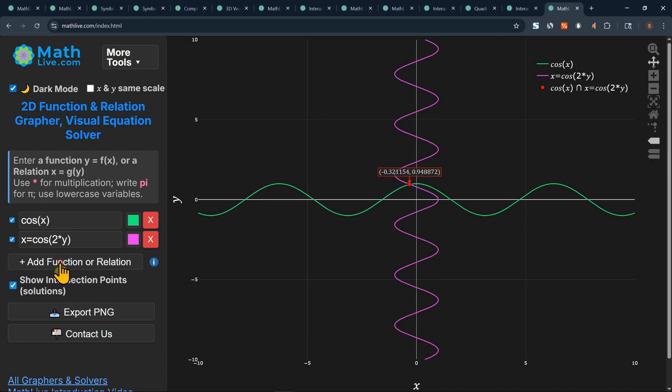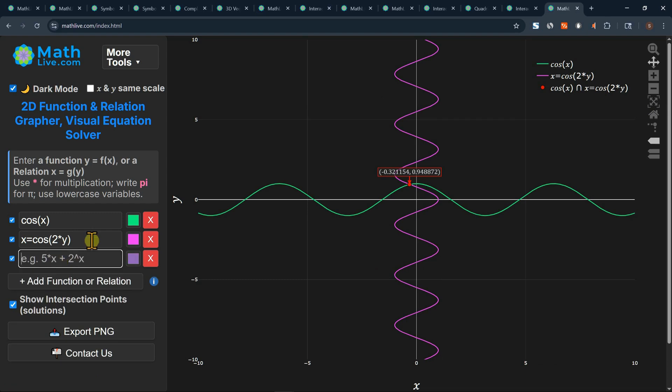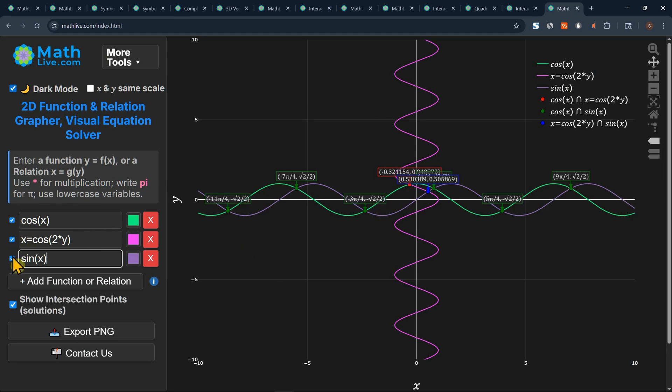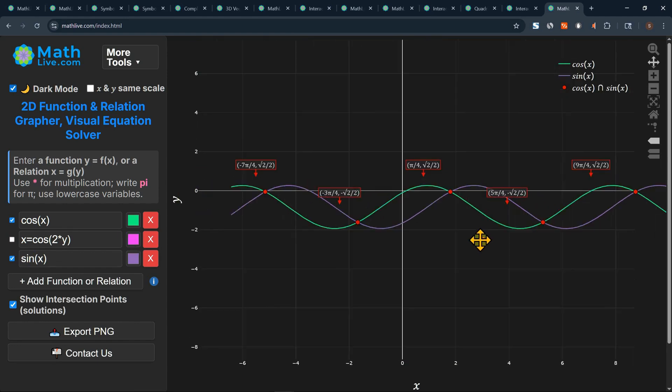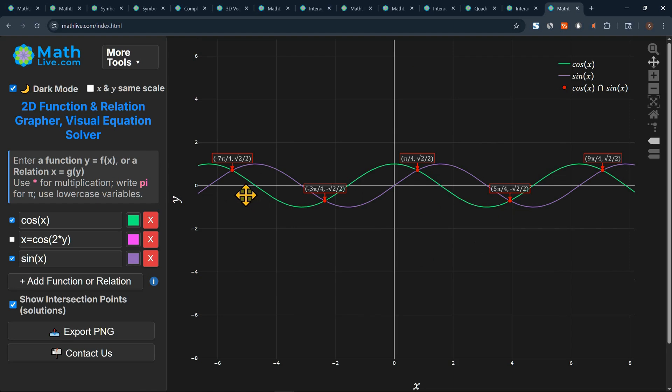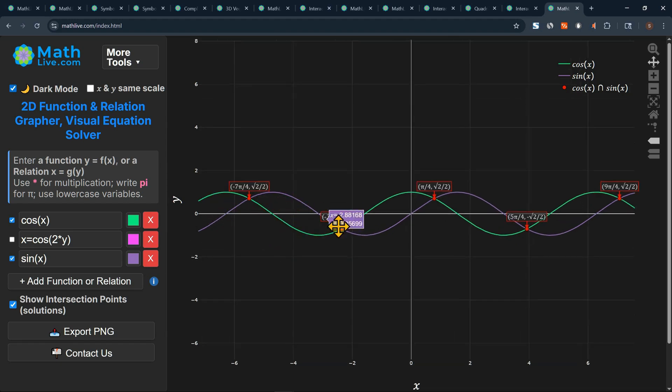Let's add a third function. Let's call this sine x. So now we show all this intersection. Let's turn off the relations. So let's turn off this. And now you are showing the intersections of cosine and sine. And you are writing the solutions in terms of pi.